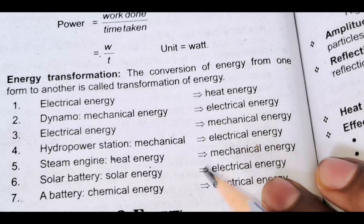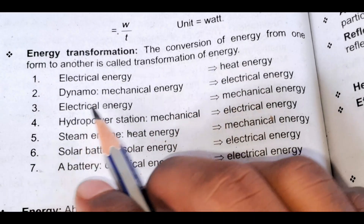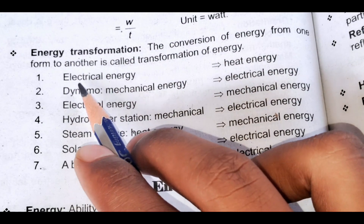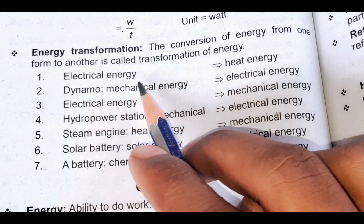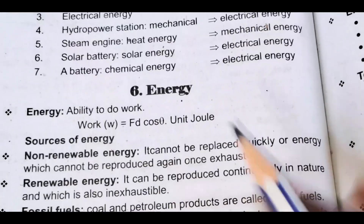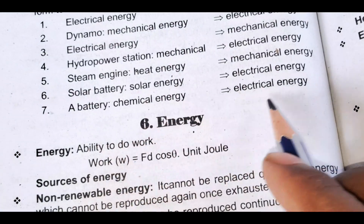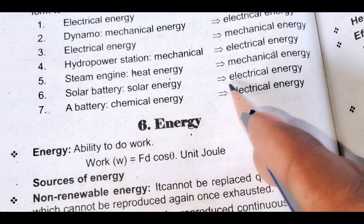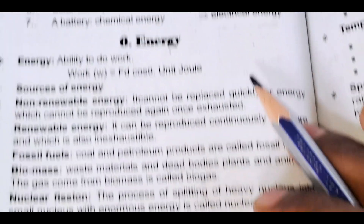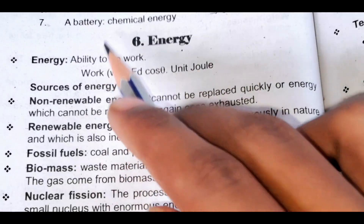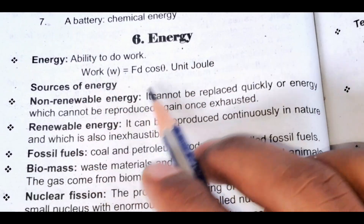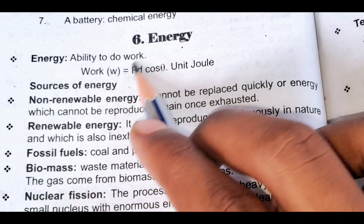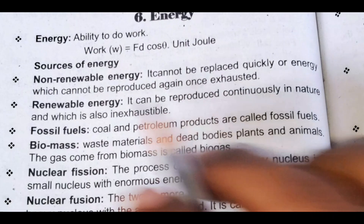Energy transformation: dynamo converts mechanical energy to electrical energy; heat energy; battery — chemical energy; solar energy. Work done equals F·d·cos θ. Source of energy.